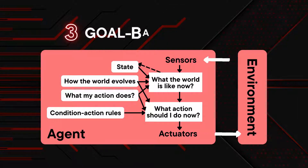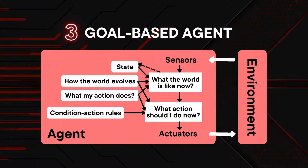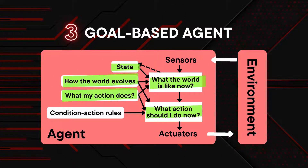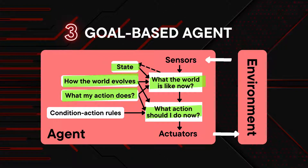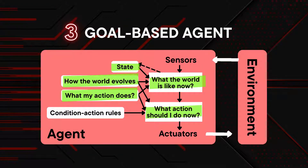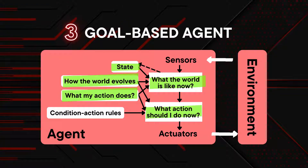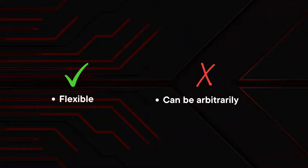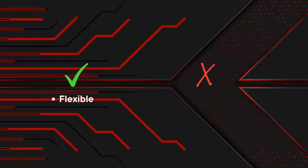A goal-based agent is given a goal and some knowledge or model. It keeps track of the world state as well as the set of goals it is trying to achieve, and chooses an action that will eventually lead to the achievement of its goals. The benefit is that it is flexible. However, the weakness is that it can be arbitrarily slow.